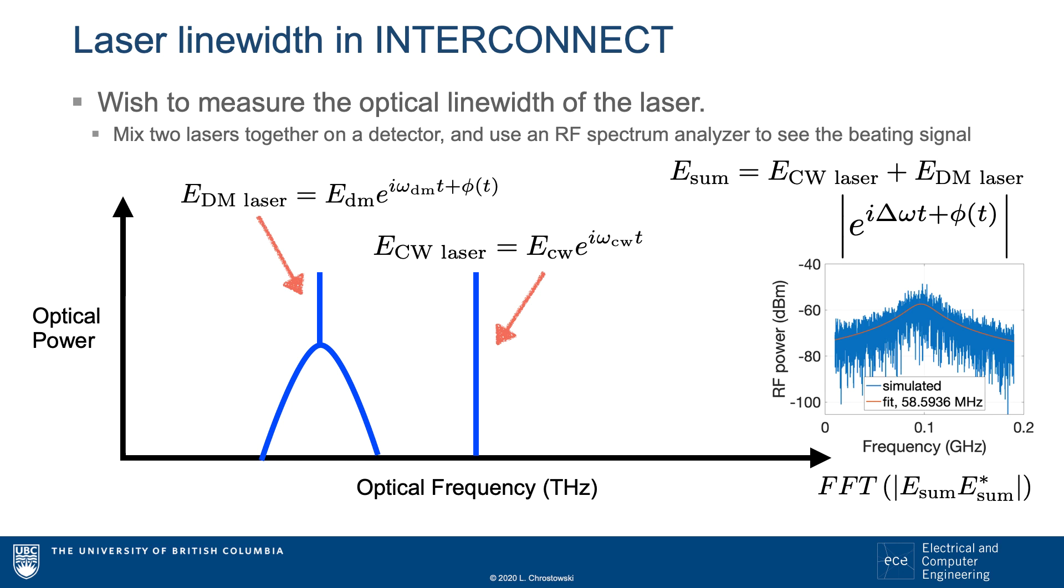These two lasers' electric fields are added together using a splitter, and the detector takes a square of the electric fields. The squaring results in a mixing of the two signals.